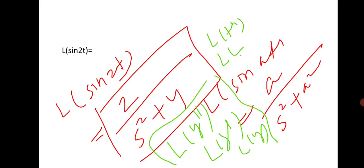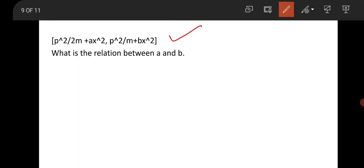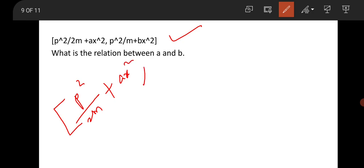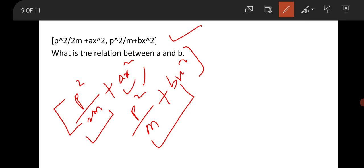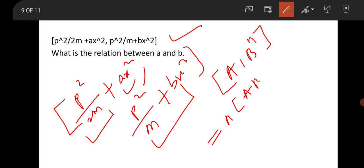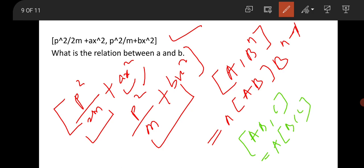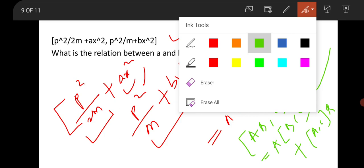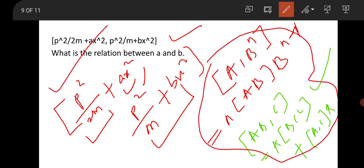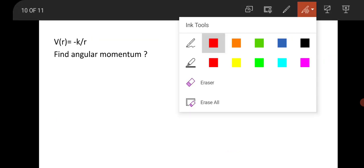Here is a question from quantum mechanics on operators — this is easy and was previously a CSIR question. It involves the commutator of p²/2m + ax² with p²/m + bx². You can handle each term separately, and the important properties to use are: [A, Bⁿ] = n[A,B]Bⁿ⁻¹, and [AB, C] = A[B,C] + [A,C]B. Using these two formulas you can solve this easily.